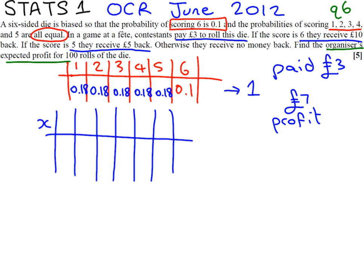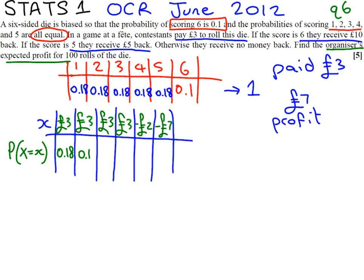If the contestant rolls a 1, 2, 3 or 4, the organiser is going to gain £3. If the contestant rolls a 5, the organiser is going to have to pay a fiver and hence lose £2. And if the contestant gets the big money, the £10 prize, the organiser will lose £7. The probabilities are 0.18 for outcomes 1 to 5, and 0.1 for a 6.